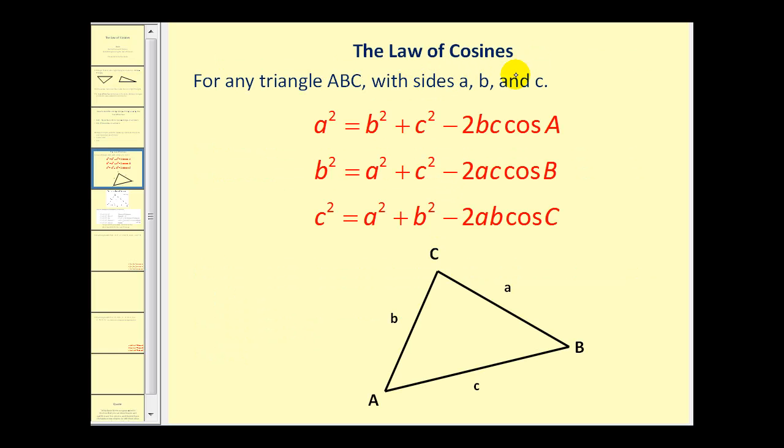Here's the law of cosines for any triangle ABC. Remember that side A is opposite angle A, side B is opposite angle B, and side C is opposite angle C. If we take a look at these three formulas, the most important part to remember is whatever angle we're using, the side opposite that angle would be the side on the other side of the equal sign.